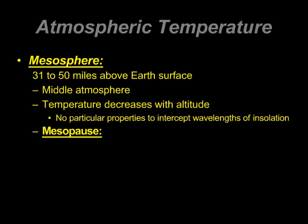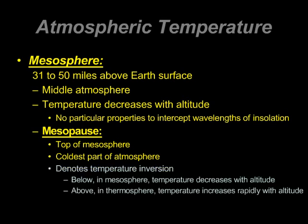At the top of the mesosphere, we find the mesopause, which is also at the bottom of the thermosphere. The mesopause denotes the change between the mesosphere and the thermosphere. The mesopause would be the coldest part of Earth's atmosphere. These pauses denote a temperature change — below the mesopause, temperature decreases with altitude; above the mesopause, temperature increases with altitude.